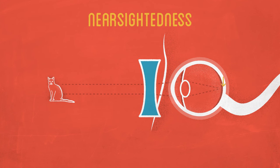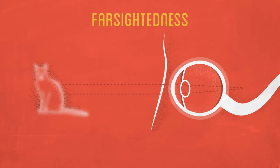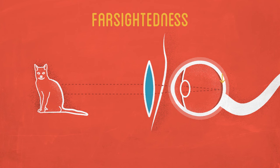On the other hand, farsightedness or hyperopia, that's the opposite condition where the optics of the eye are a little weak. The image gets focused a little further behind the retina, which essentially just causes a blur, and can be fixed by placing a convex lens in front of the eye, moving the focal point back to the retina.